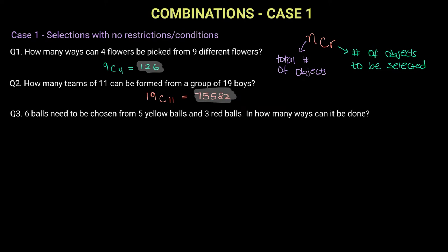So looking at our total number of objects which are eight, we have eight balls, it doesn't matter what their colors are. We need to choose six balls from eight and using our calculator our answer is 28. There are 28 ways of choosing six balls from eight.